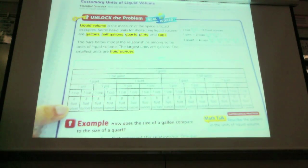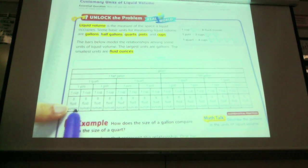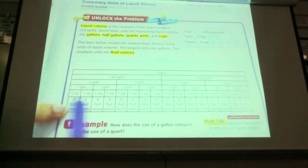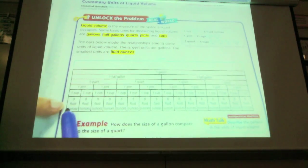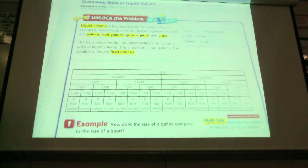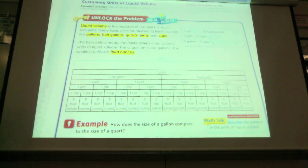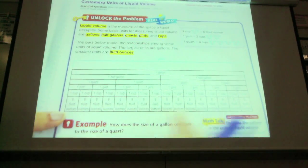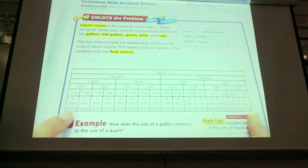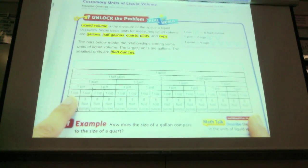Even though this kind of looks like length, this is not what a fluid ounce looks like. It's just showing you compared to other items what it would look like. Eight fluid ounces equals one cup — by looking at this bar you can see that eight fluid ounces equals a cup.